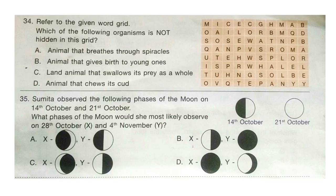Question 34: Refer to the given word grid. Which of the following organisms is not hidden in the grid? A. Animal that breathes through spiracles. B. Animal that gives birth to young ones. C. Land animal that swallows its prey as a whole. D. Animal that chews its cud. The correct answer is option C. Option A is mosquito — it is present. Option B can be cow — it is also present in the grid. Option C is not present in the grid.